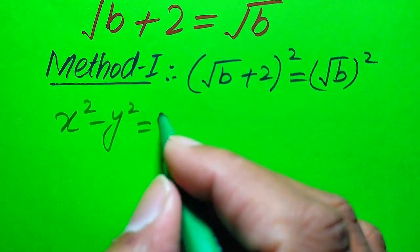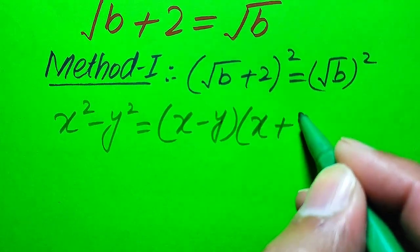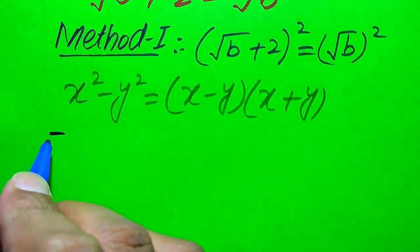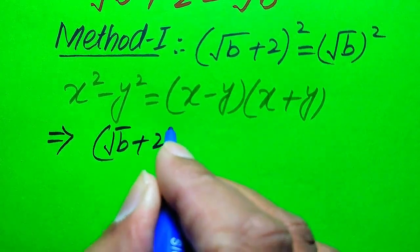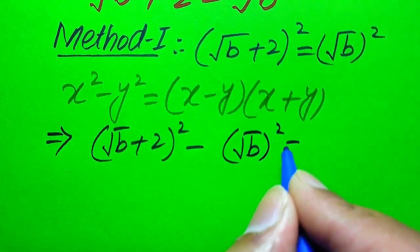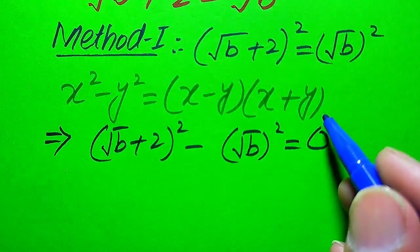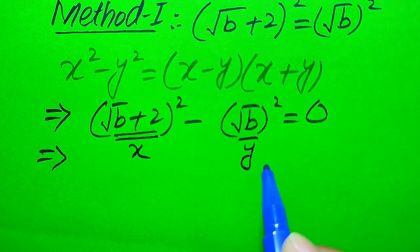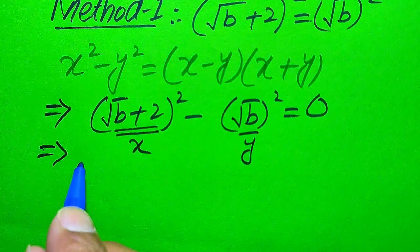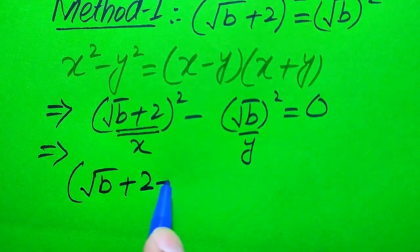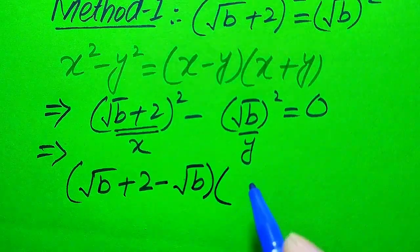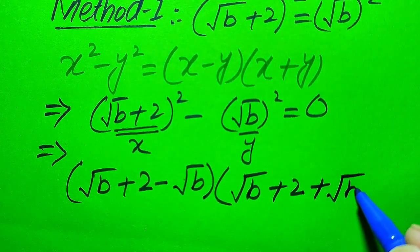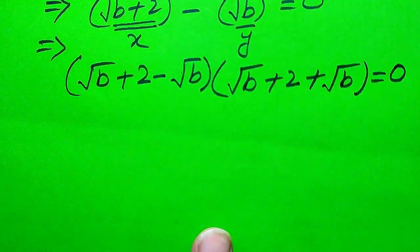We use the formula: x² - y² = (x - y)(x + y). We move the right-hand side term to the left, giving us: [√(B+2)]² - [√B]² = 0. Applying the formula, with x = √(B+2) and y = √B, we write: [√(B+2) - √B] × [√(B+2) + √B] = 0.